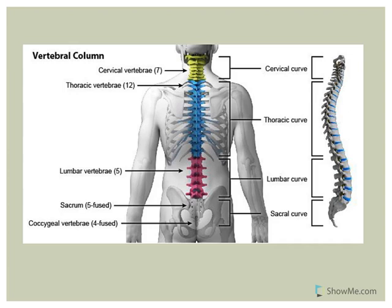The vertebrae protect the spinal cord. From a side view, we have curvatures: the cervical curve and the lumbar curve are secondary compensation curves — they develop after birth to shift weight as a child lifts their head and learns to walk. The thoracic curve and the sacral curve are primary accommodation curves that you're born with.